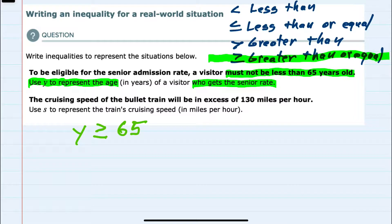but they must not be less than 65. Then for the second situation, the cruising speed of a bullet train will be in excess of 130 miles per hour. Use s to represent the train's speed.